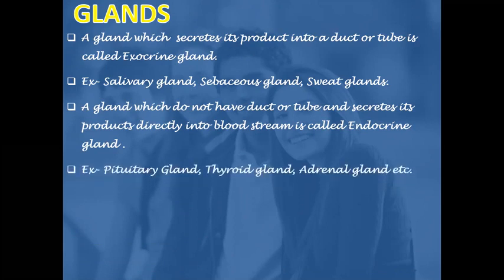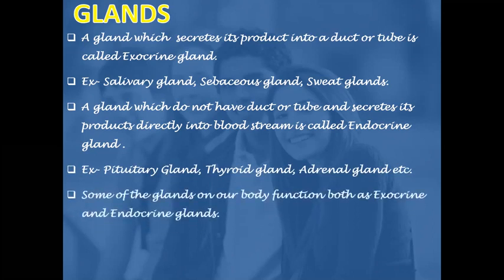Endocrine glands are also called ductless glands. Examples are pituitary gland, thyroid gland, adrenal gland, etc. Some of the glands in our body function both as exocrine and endocrine glands. Examples are pancreas, testis, and ovaries.